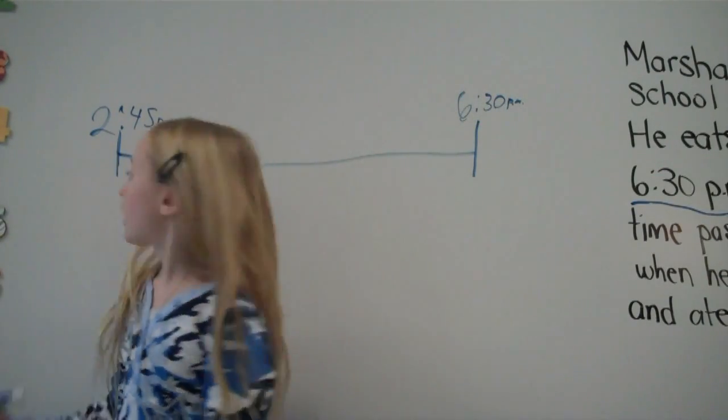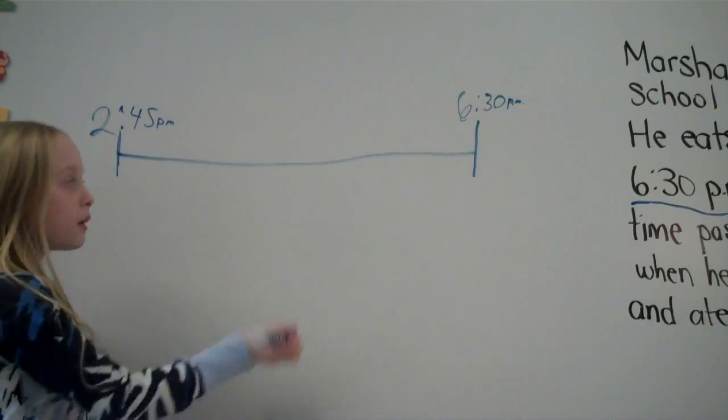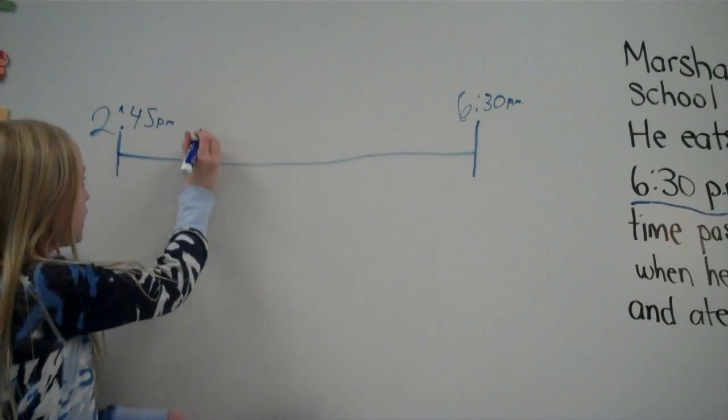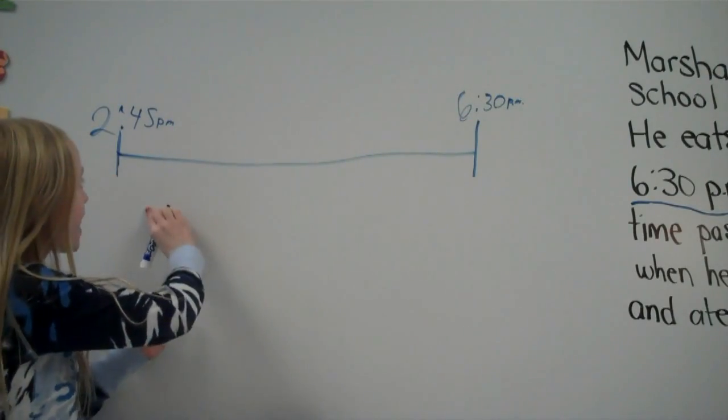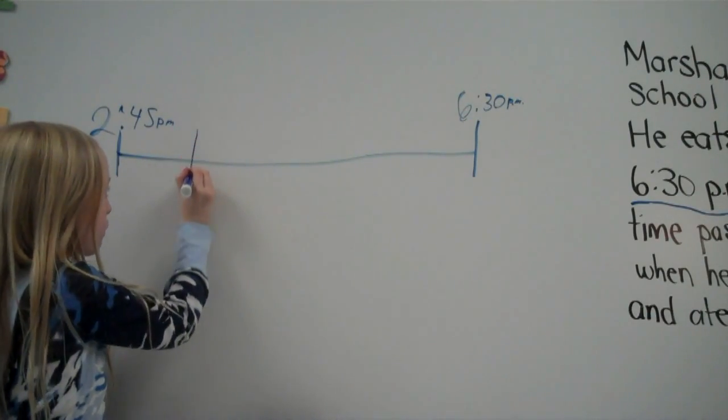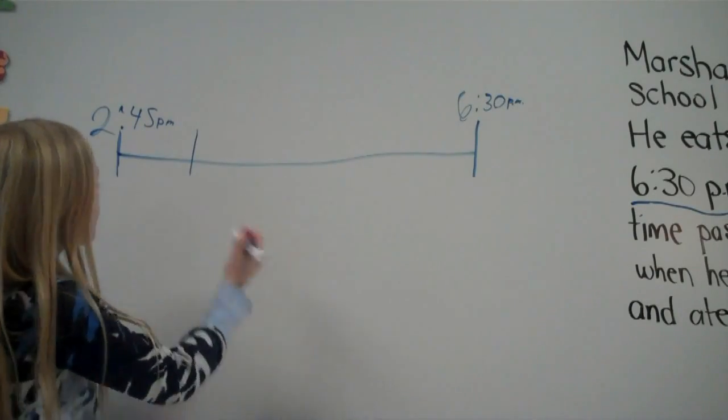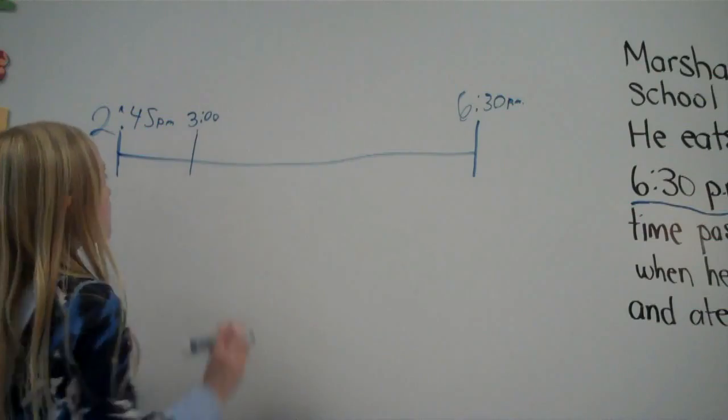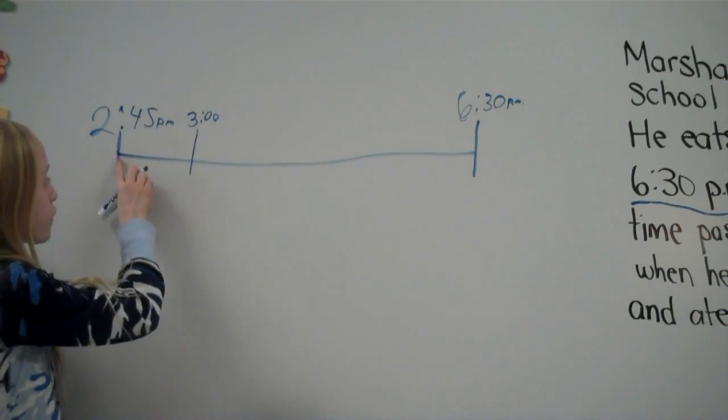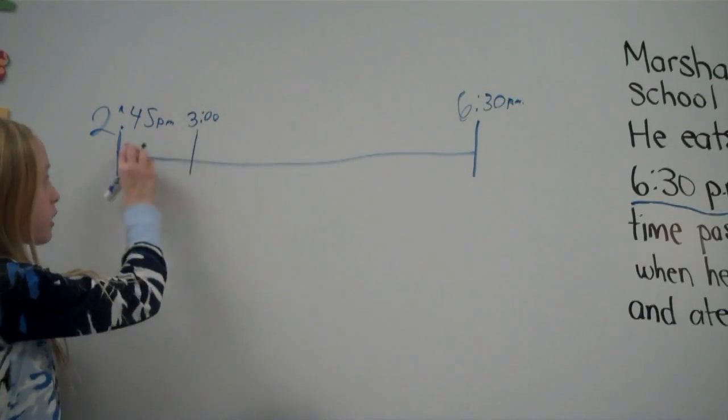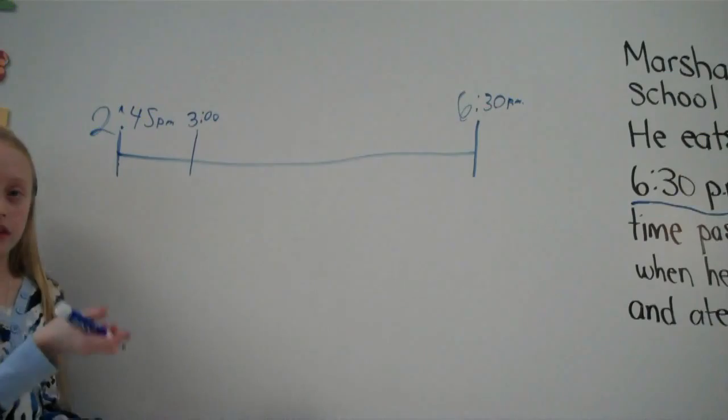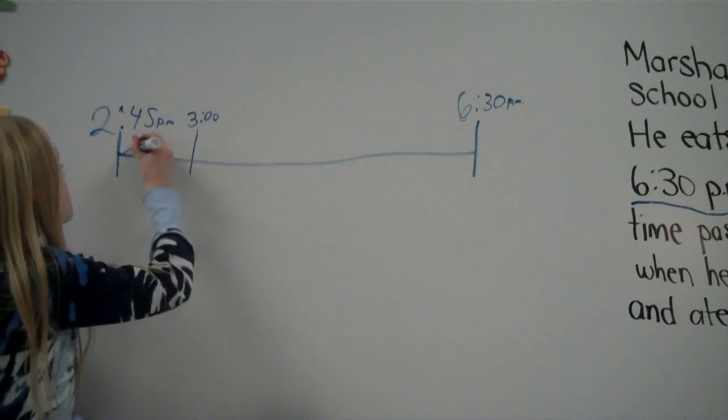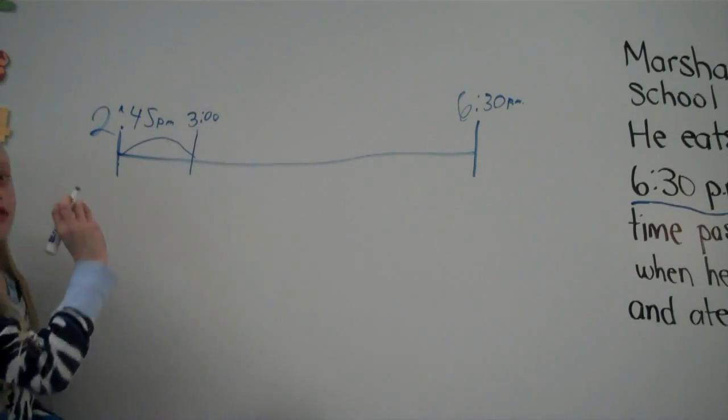Now we have to find out how many minutes between 2:45 p.m. and the next hour. So, the next hour is 3 o'clock. Then we have to find out what period of time goes in between 2:45 p.m. and 3 o'clock. And that is 15 minutes.